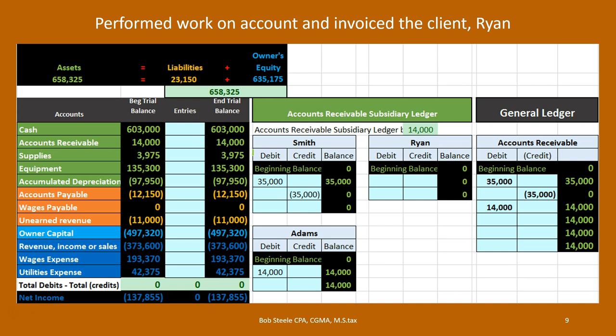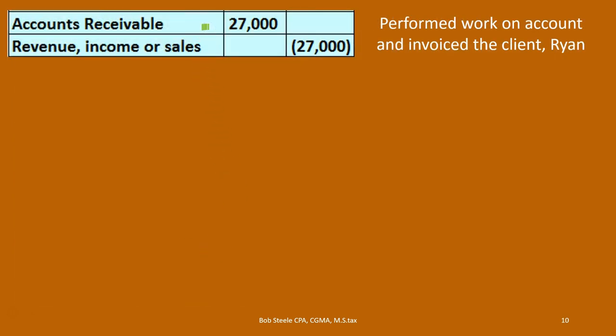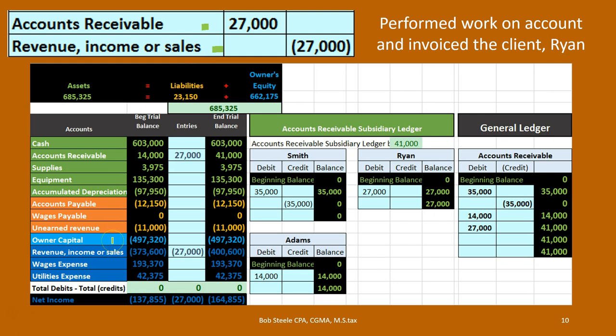Then we perform work on account and invoice client Ryan. We did another job and invoiced client Ryan. Is cash affected? No, we did work and invoiced the client but didn't get the cash yet. That means we got an IOU — the receivable. The receivable has a debit balance; we're going to debit it again, making it go up by whatever we billed the client. The credit goes to revenue because we earned revenue — we did work and earned revenue. We record revenue when we earn it under the revenue recognition principle. The journal entry is: debit accounts receivable $27,000, credit revenue. It's our revenue type account on the trial balance.